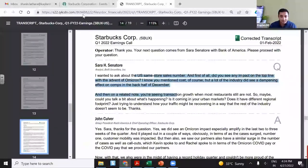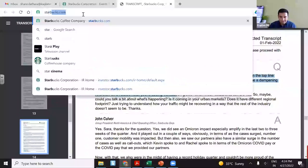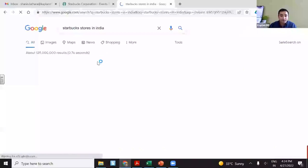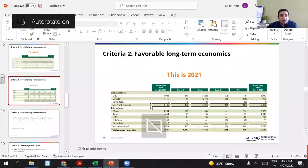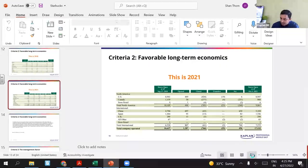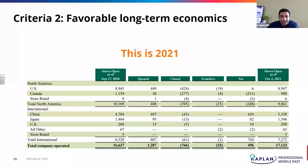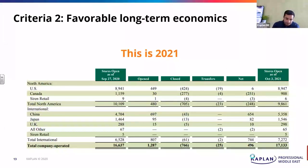Hardly 250 Starbucks stores. If you read their conference calls, they have been very, very vocal: our growth strategy is going to be India and China. Over time, they will have more stores in India and China than what they have in the US. So scalability — I'm not saying this is an advice to invest — I'm just giving you a pattern to think. How do you think about growth? Are growth opportunities available? You can look at conference calls to check.